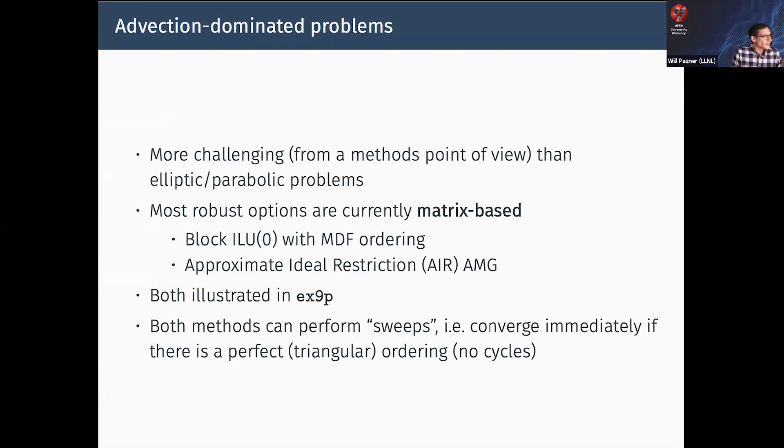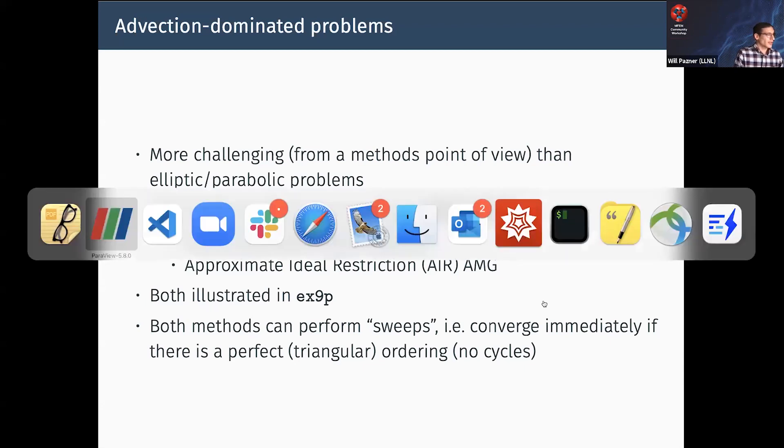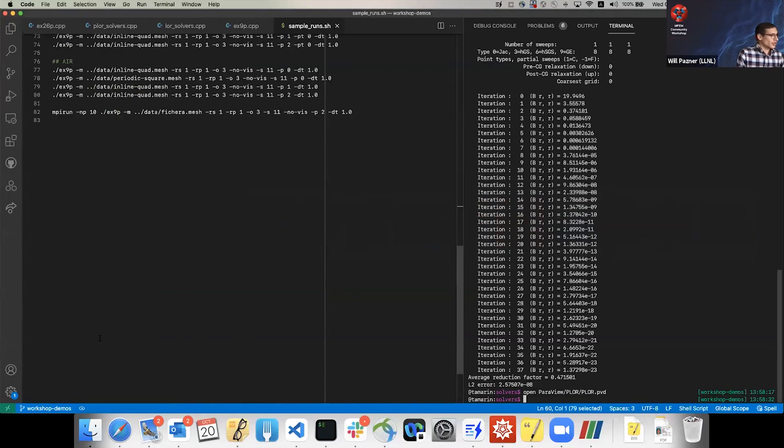For advection-dominated problems, as I mentioned, it's more challenging. But we do provide this block ILU0 with a minimum discarded fill ordering and approximate ideal restriction AMG. Both of these methods perform sweeps - at least local on-processor sweeps - so they'll converge immediately if there's a perfect triangular ordering for advection problems.